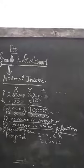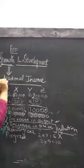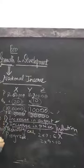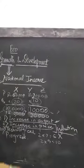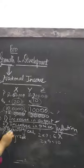In the previous video I said that national income can grow because of three reasons: increase in output volume, increase in price, and technological progress. Now what do we mean by technological progress?